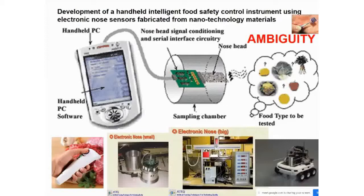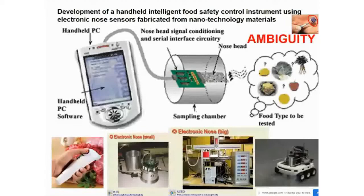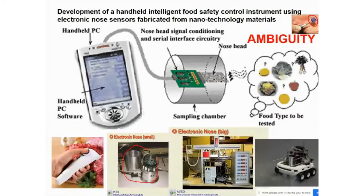For example, the electronic tongue developed by the University of Texas — it sits on a handheld device, you place food material near it, and you get electronic signals. Those signals also have ambiguity and all these issues. Similarly, there are various types of electronic noses — small ones, large ones, ones that move through pipes where human beings cannot go — and there also we can have ambiguity.